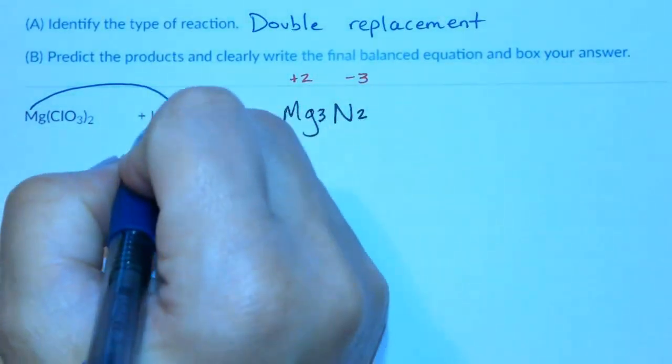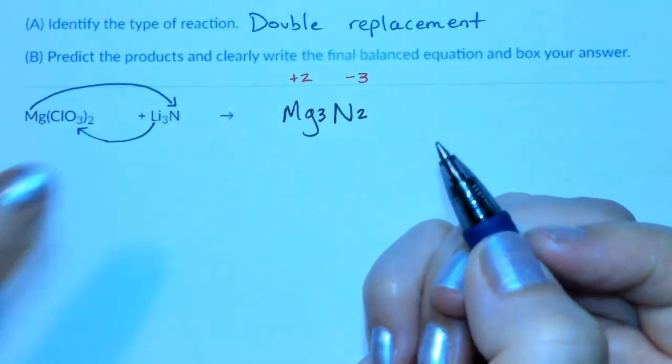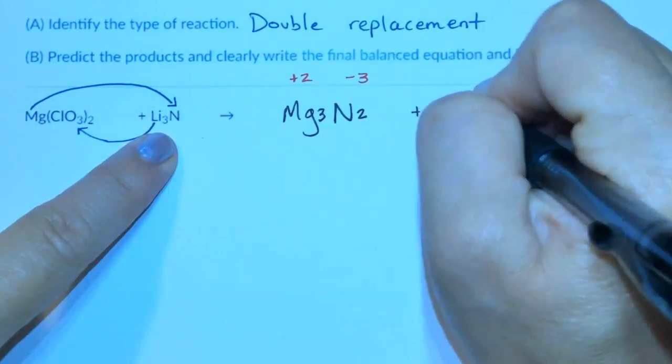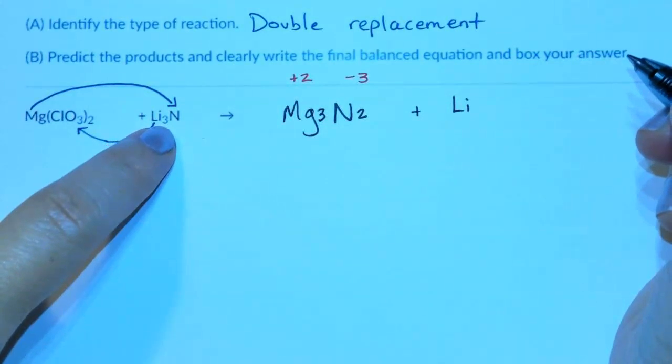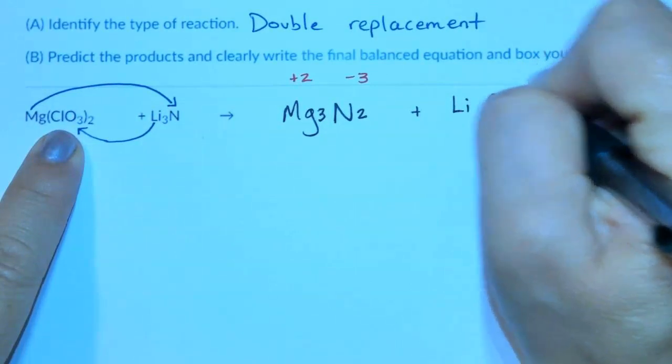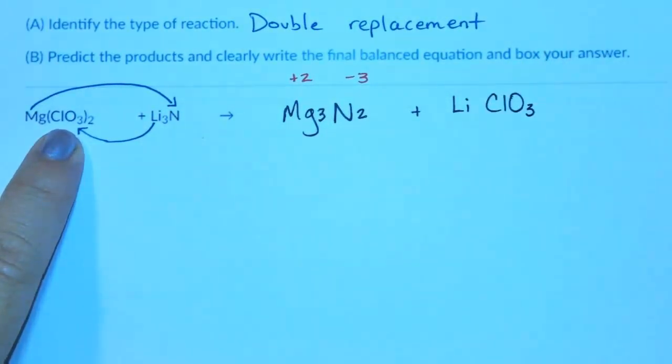Then we're going to put third and second together. And we are going to bring the lithium, but do not carry over that subscript of a 3. And then everything inside of the parentheses, ClO3, I'm going to carry,